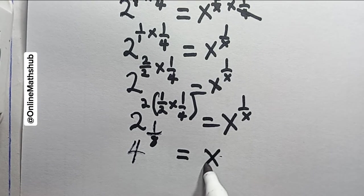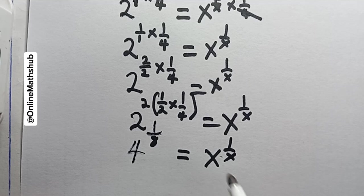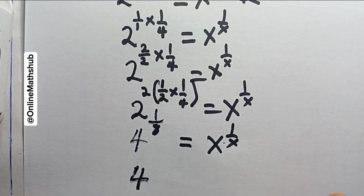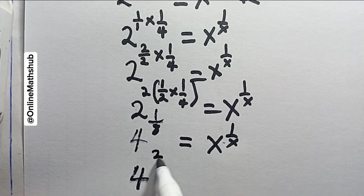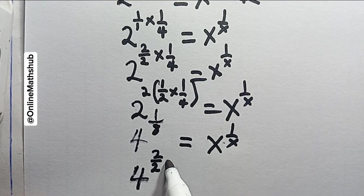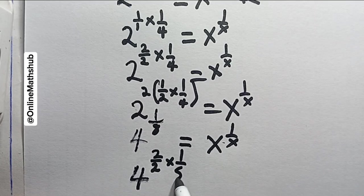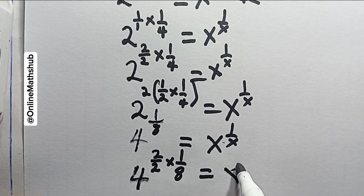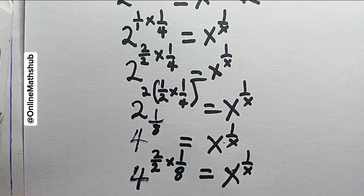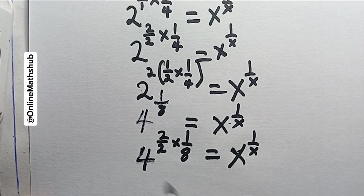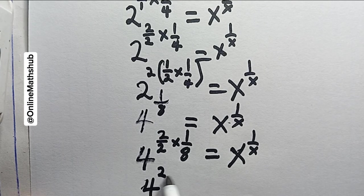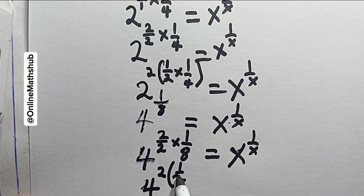What I'm going to do next is multiply this side by 2/2, which is the same as 1, and multiply by 1/8 over here. This will equal x^(1/x). If I factor these two out, I'm going to have 4^(2 × 1/2) multiply by 1/8.